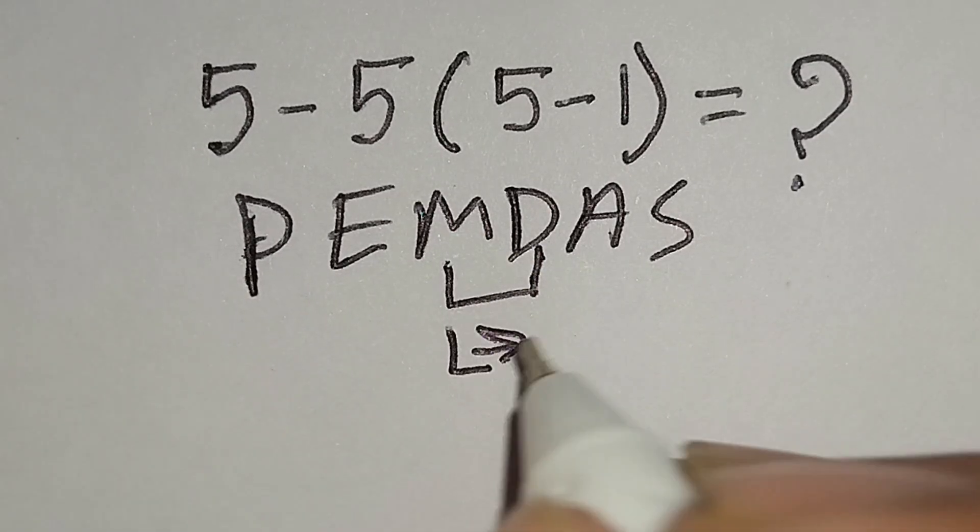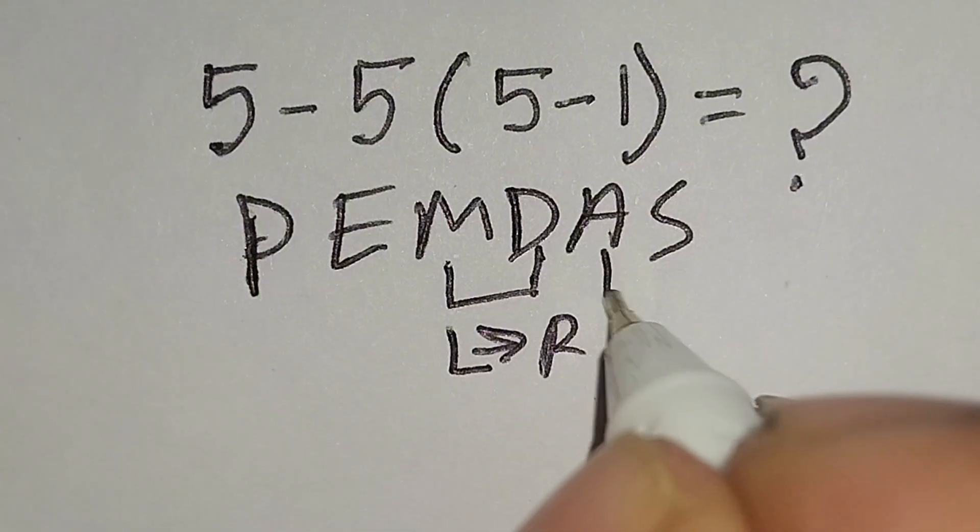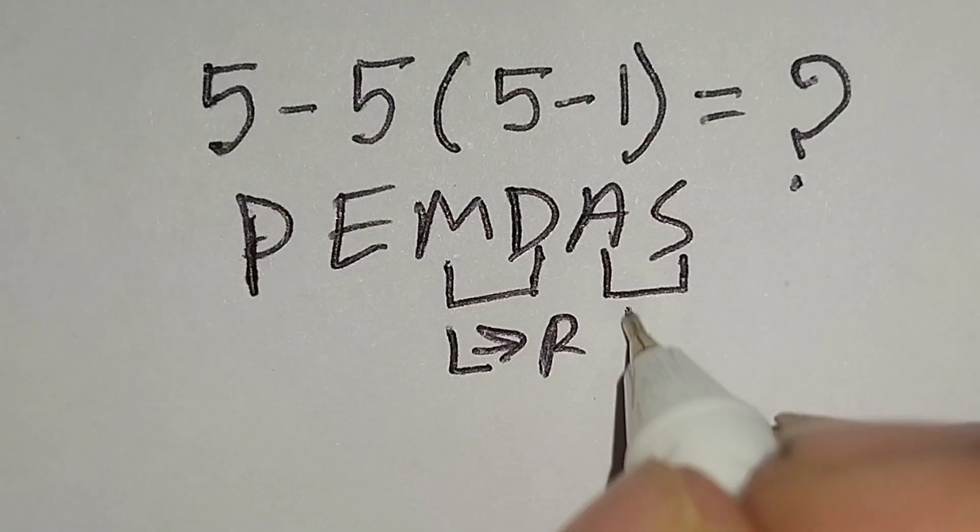Remember, multiplication and division have same priority, for this we have to work left to right. And addition and subtraction have same priority, for this we have to work left to right also.